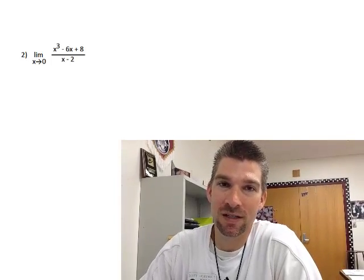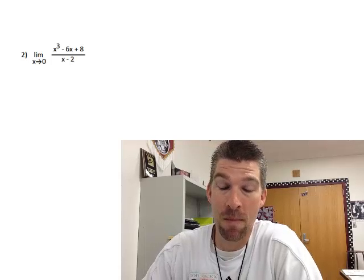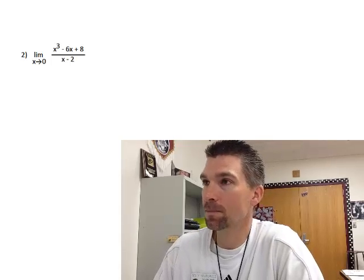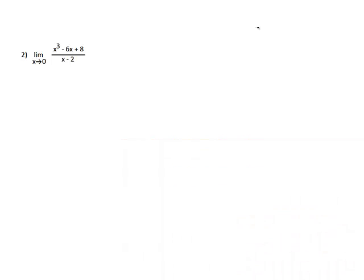All right, what we're going to do on this problem is look at a limit. One of the cool things about limits is you can make a direct substitution into that problem. If we can make that direct substitution, life just gets really nice. With this limit as x approaches zero, I've got x cubed minus six x plus eight over x minus two. I want to just check real quick, can I put a zero in for all the x's?